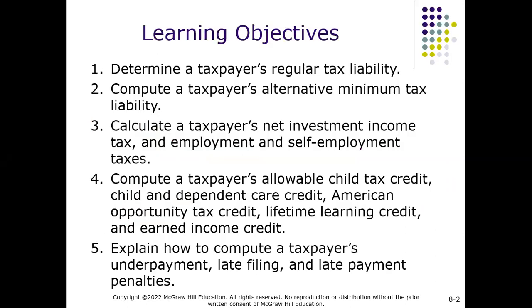Our learning objectives are: we're going to calculate the regular tax liability — we didn't get through Chapter 1 so we'll cover that. We're going to look at the taxpayer's alternative minimum tax liability, net investment income tax, employment and self-employment taxes. Then we'll look at some tax credits: child tax credit, child and dependent care credit, the American Opportunity and Lifetime Learning Credits, and earned income credit. Finally, we'll talk about how we compute underpayment penalties, late filing, and late payment penalties.